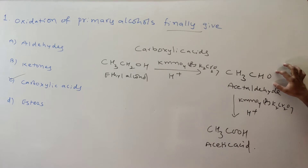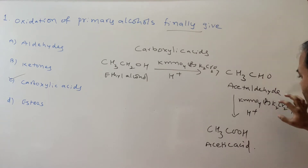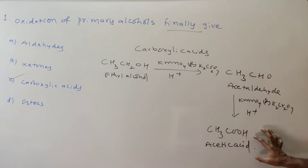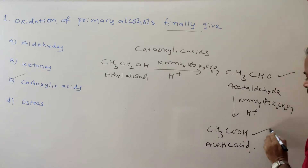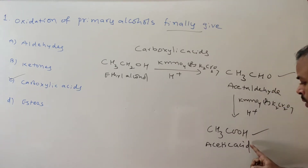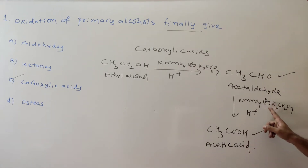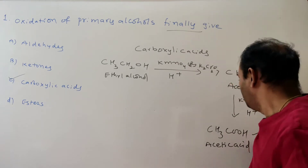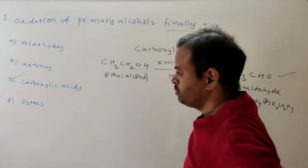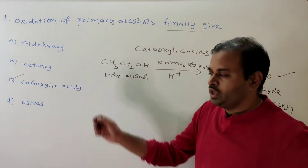First the primary alcohol gives aldehyde, and then on further oxidation, aldehyde readily converts to carboxylic acid — in presence of KMnO4 or K2Cr2O7 under acidic conditions. So the answer is carboxylic acid.